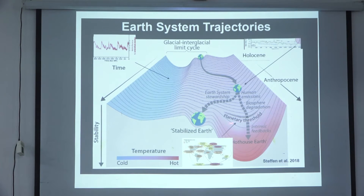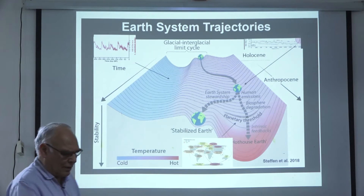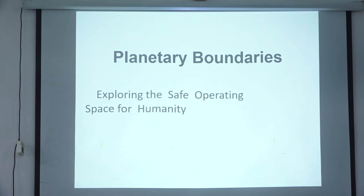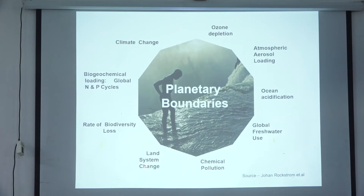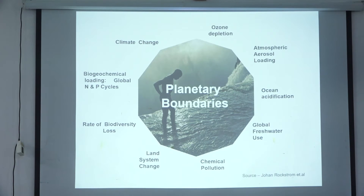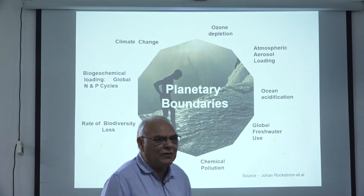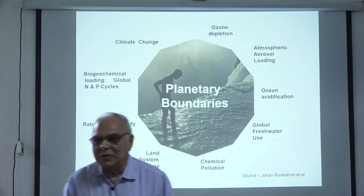There is a book by Rockstrom — I think the title is 'Small Planet, Big World.' This is the so-called doughnut — shaped like a doughnut — where all the things being impacted negatively are on the outer periphery, and we are interested in a good social foundation: water, food, health, gender equality, social equality, energy, jobs, voice, resilience, education, income — and a safe and just space for humanity, inclusive and sustainable economic development.